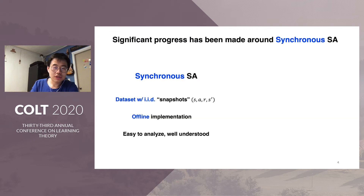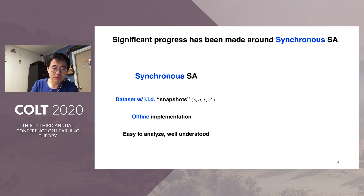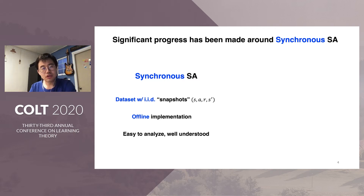There are generally two schemes of stochastic approximation. The first scheme is called synchronous stochastic approximation. It means that there is usually a dataset with IID samples of the state, action, reward, and next state — snapshots of the system. This is typically implemented in an offline manner. It is easy to analyze and well understood because of the IID nature of the samples.